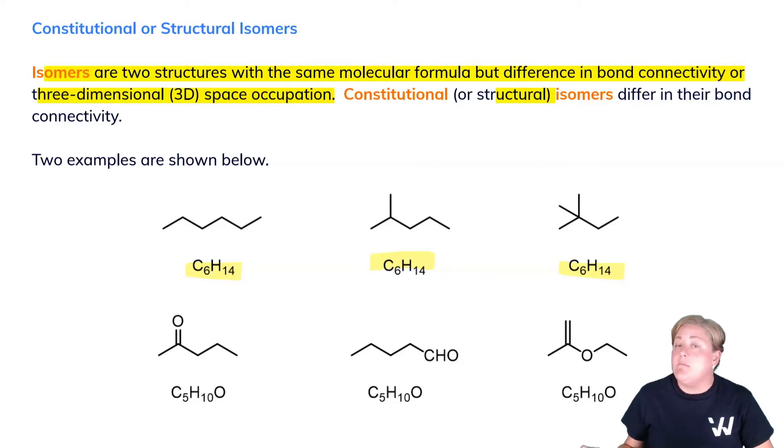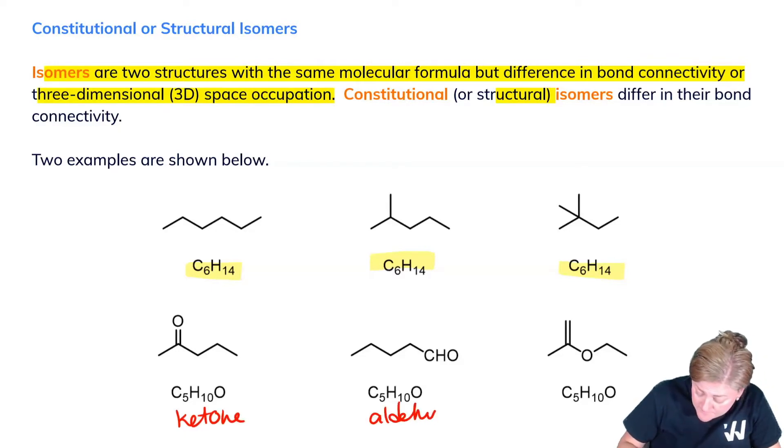Importantly, in organic chemistry as we start to introduce heteroatoms, we can also affect the type of functional groups present. Here we have a ketone, here we have an aldehyde, and here we have an ether. All of these have the same molecular formula C5H10O, all of them contain a single oxygen atom, and yet they are all different functional groups. This is entirely because of constitutional or structural isomerism.